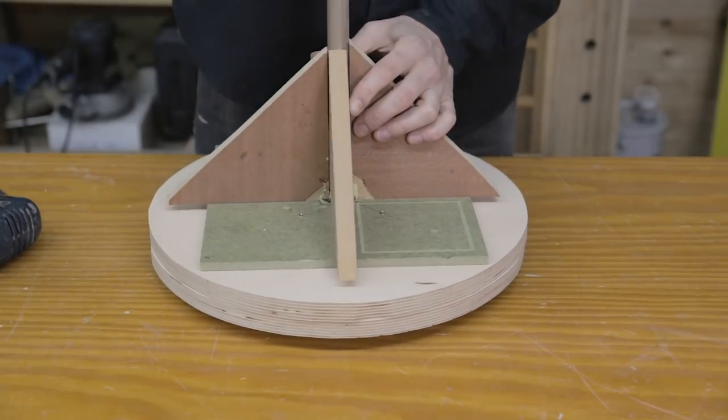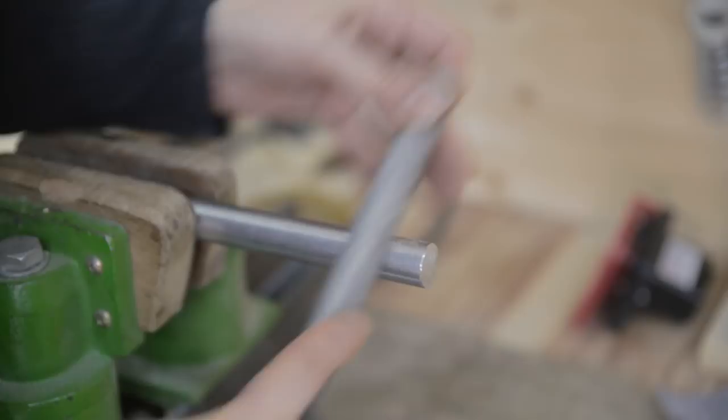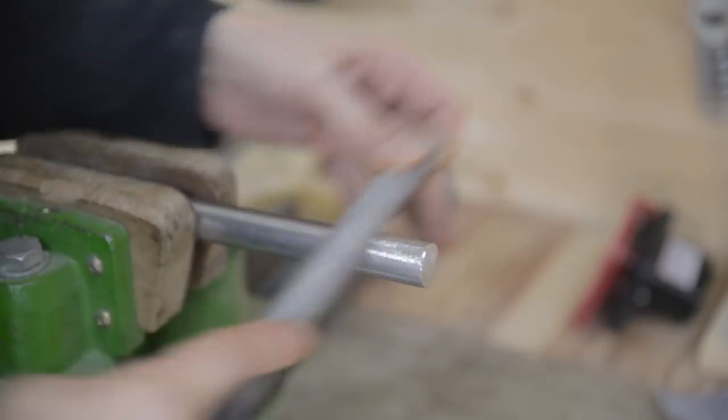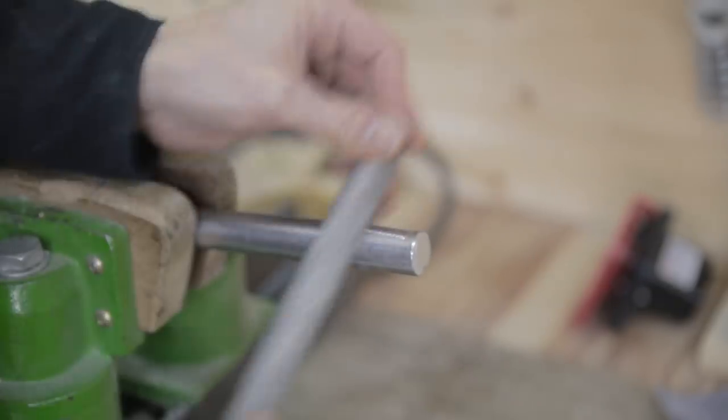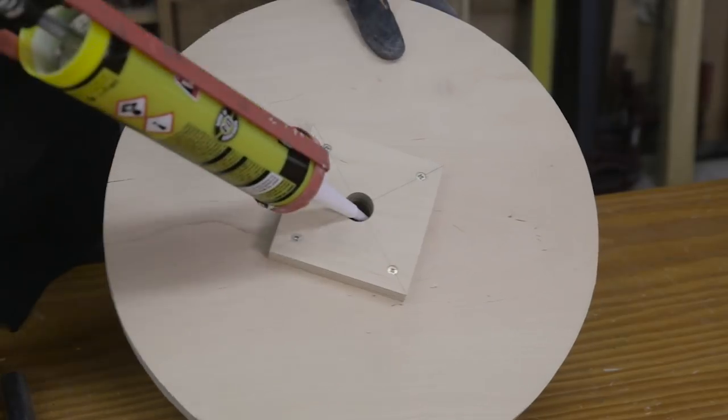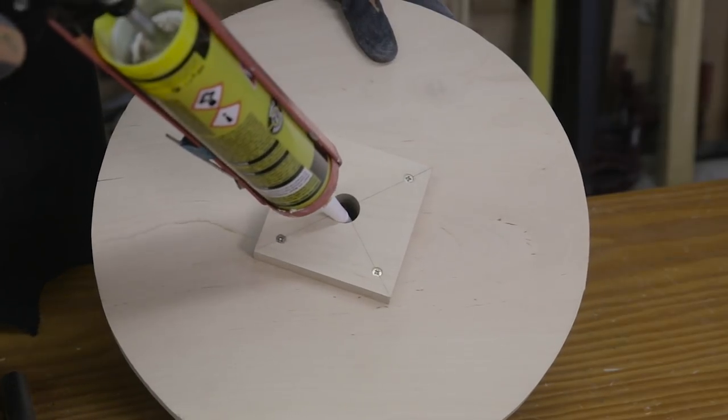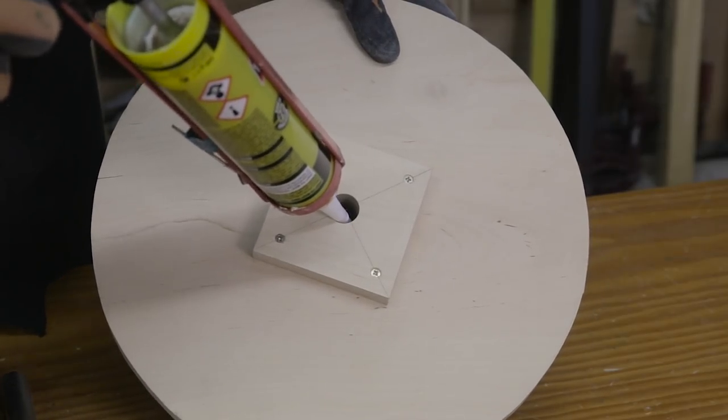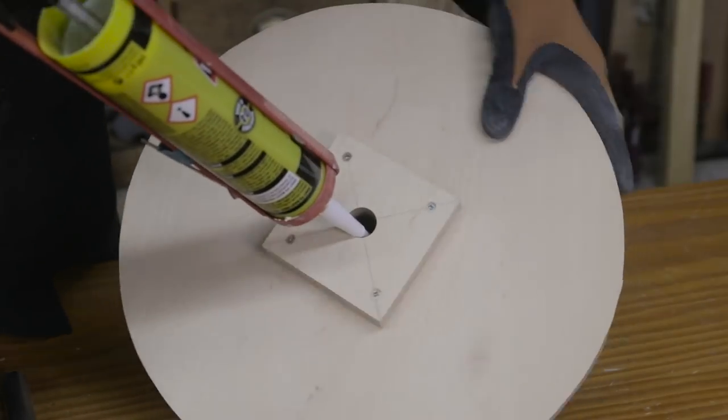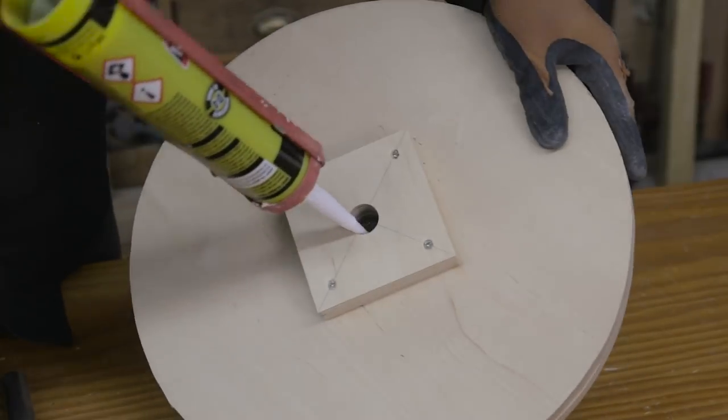I remove the rod for now and make grooves in it with a file so that the adhesive works better. I apply polyurethane adhesive. It's a really strong bonding agent that expands when it dries.